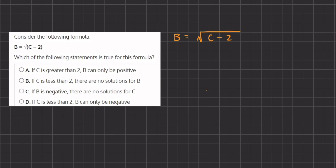If we take a look at our limitations for each of the variables: c has a limitation that c has to be greater than or equal to 2. If it is less than 2, then we'll have a negative inside of the radical, and that is just impossible. So any number greater than or equal to 2 will give us an answer for b. Now b will always have two options — it can always be negative or positive, because each square root has a negative or positive answer. Therefore, we know our two limitations for b and c.